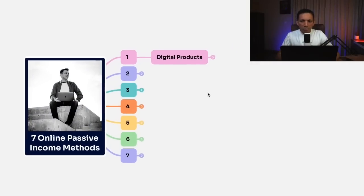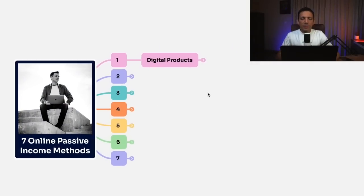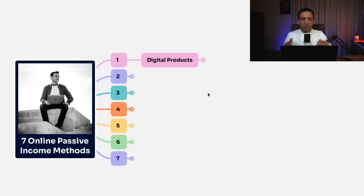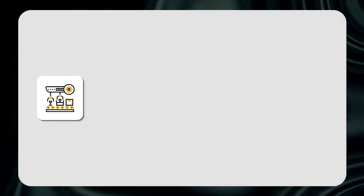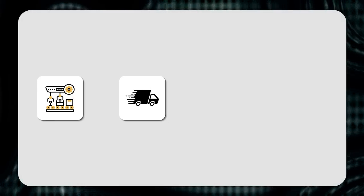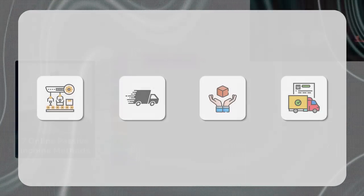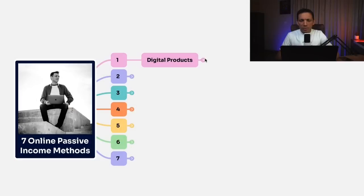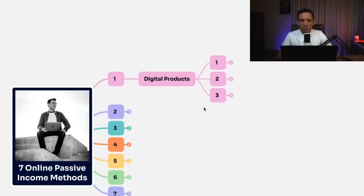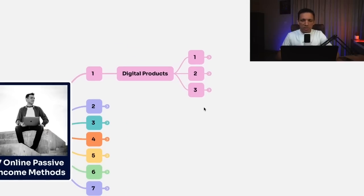The first and most effective method is creating and selling your own digital products. When it comes to digital products, there is no question of manufacturing, shipping, handling, or logistics — all of that is not there. And when it comes to digital products, I want to break it down into three categories.